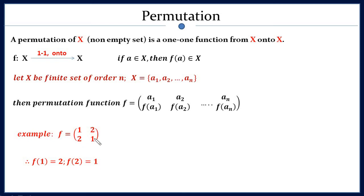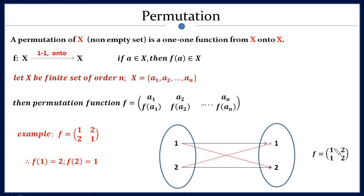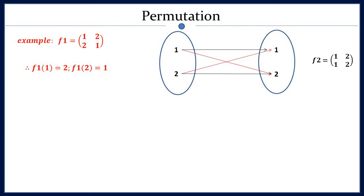This function takes the elements of set X to the same set X. The function maps element 1 to element 2 and element 2 to element 1. You can also represent it graphically. For this set you can define another permutation function (1 2 / 1 2), where element 1 goes to element 1 and element 2 goes to element 2. Since this set contains only 2 elements, we can have only 2 permutation functions.